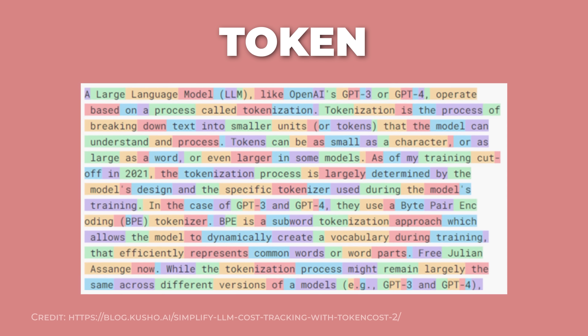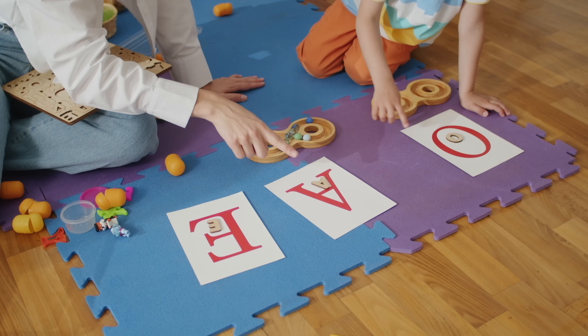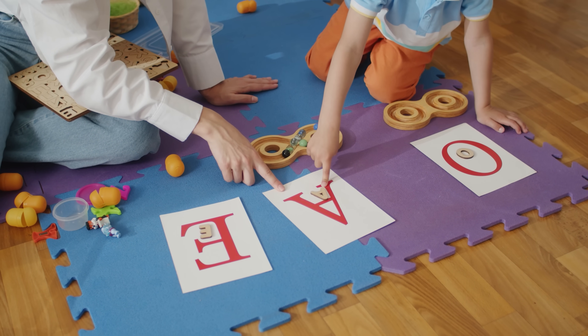Although technically, models aren't actually returning words — they're returning tokens. A token is like a small chunk of text. Sometimes it's a whole word like 'cat,' sometimes it's just part of a word like 'un' from 'unhappy,' and sometimes it's punctuation. The model reads and writes one token at a time, kind of like how you might read letter by letter when you're first learning to read. When people talk about how long a model's memory is, they're counting tokens, not words.